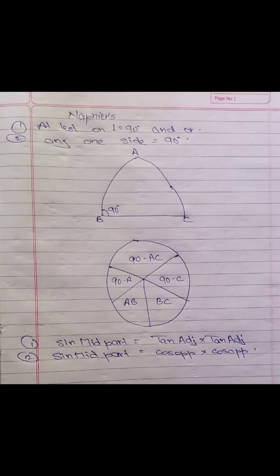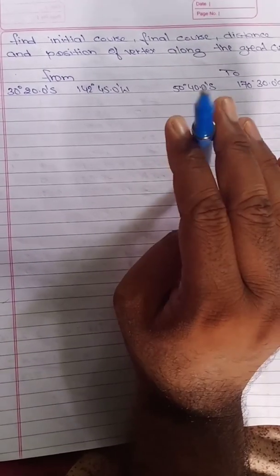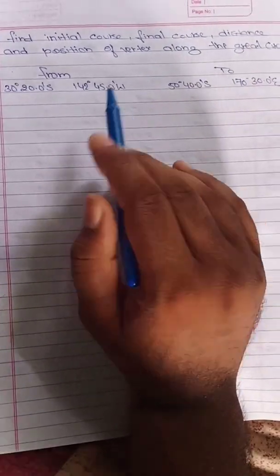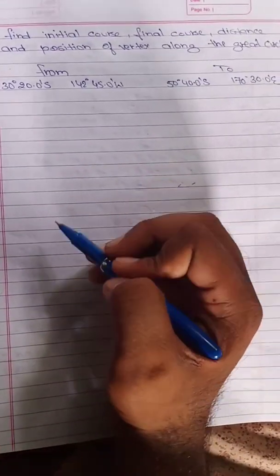We also need to learn Napier's rule. For Napier's rule, at least one angle must equal 90 degrees, or any one side must be 90 degrees — that is compulsory for applying Napier's rule. Either of these two conditions has to be fulfilled. The formula is shown on the screen.